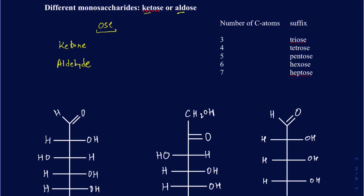How would you identify the difference between the ketone and an aldehyde? An aldehyde is going to have a carbonyl group that's going to be terminal — on the terminal carbon, one side will have at least one hydrogen and the other side will have an R group. For a ketone, the carbonyl is not going to be on the terminal carbon, but somewhere usually on the second carbon, and on each side you're going to have another carbon atom or R group.